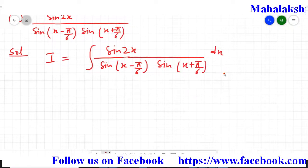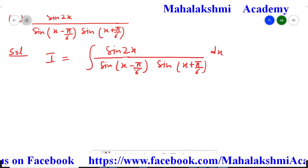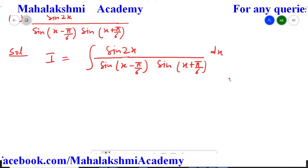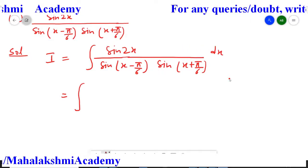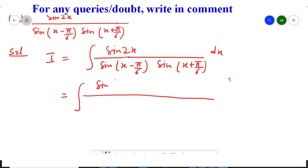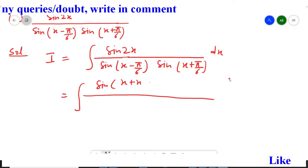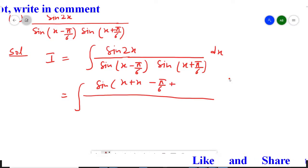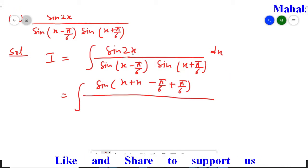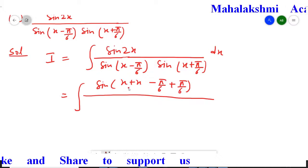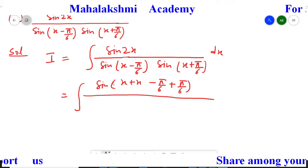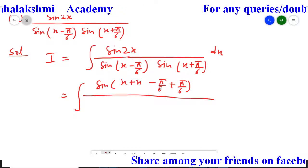Now instead of 2x, I am going to create those angles here. This question is similar to question number 12, so if you have done that you will easily understand this step. I am going to write 2x as x plus x — once I subtract π/6 and once I add π/6, so that the meaning remains the same. So if you solve it again you will get 2x only. The denominator remains as it is: sin(x - π/6) multiplied by sin(x + π/6) dx.